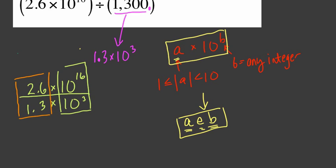2.6 over 1.3, well, that's just 2. I think of 13 going into 26 as being equivalent as an equivalent fraction. I think, okay, 2.6 divided by 1.3, if I multiply both by 10, that's the same thing as 26 over 13, which is 2.